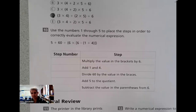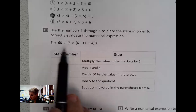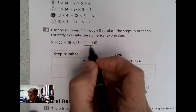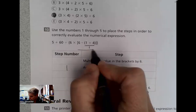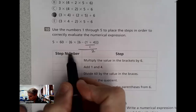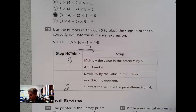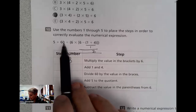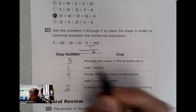Use the numbers one through five to place the steps in order to correctly evaluate the numerical expression. We have brackets, braces, and parentheses. We start on the inside — step one is adding one plus four. Step two is six minus five, subtracting the value in the parentheses from six. Step three is multiplying that value in the brackets by six. Step four is dividing — we'd have five plus 60 divided by our value. And finally, step five, we add five.